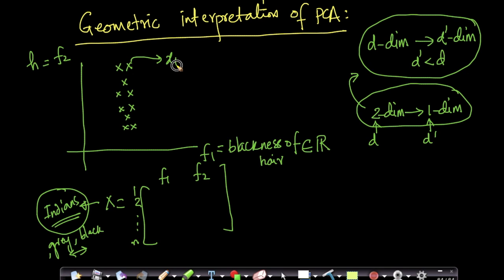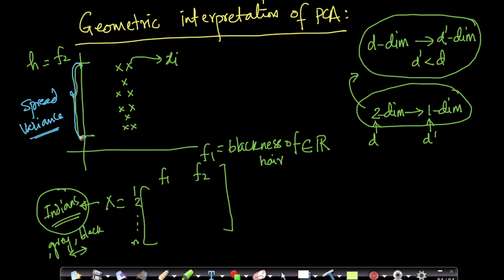One thing you'll notice quickly is heights range a lot — in this whole range you'll find your heights. So your spread on the height axis is much more. Your variance on the height axis is more. But if you look at feature F1, your variance or spread on the blackness feature is very low. Most Indians have black hair or almost very black, or slight small shades of gray.